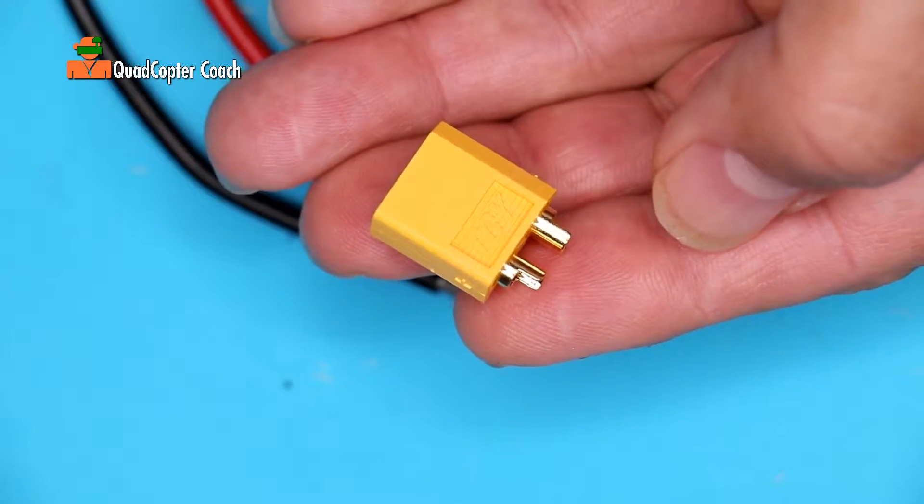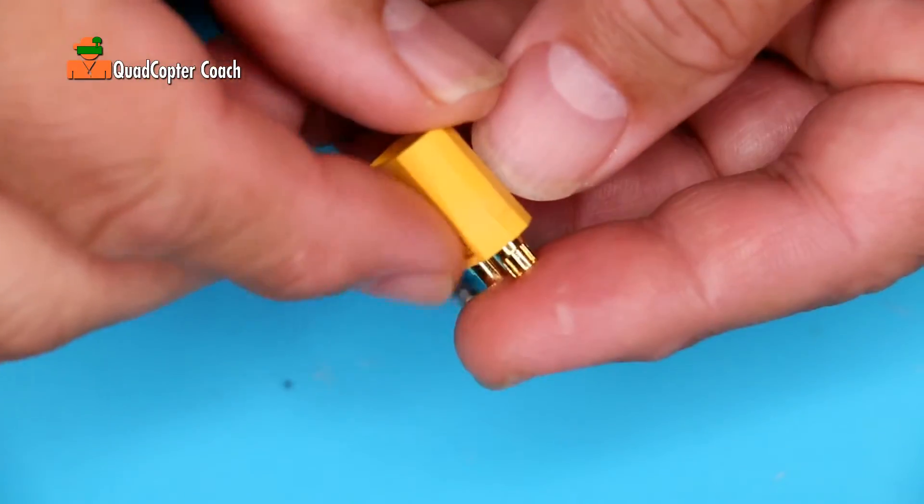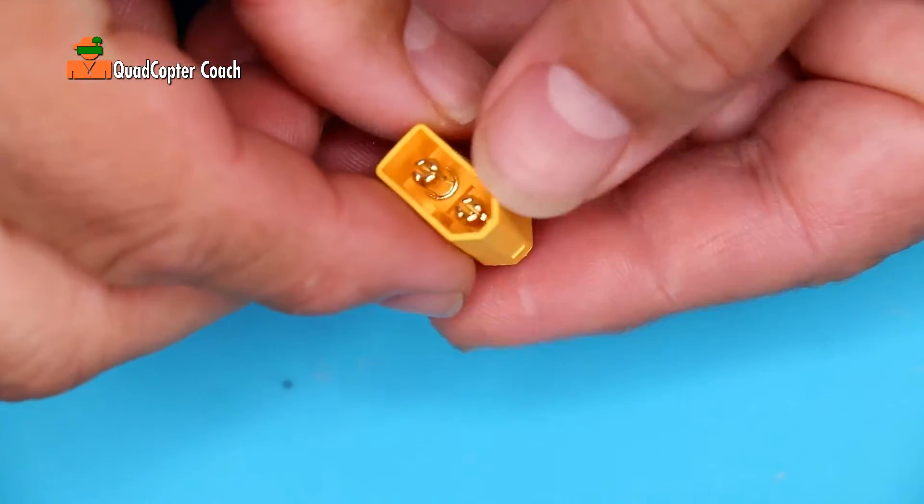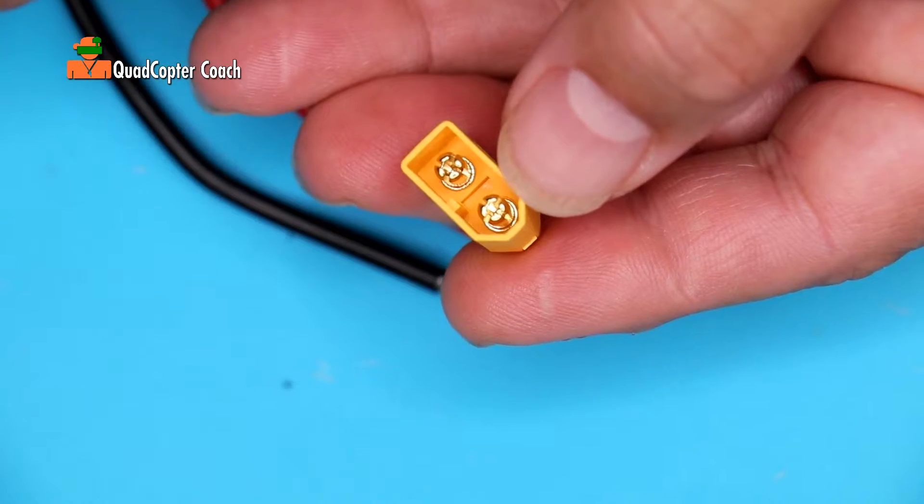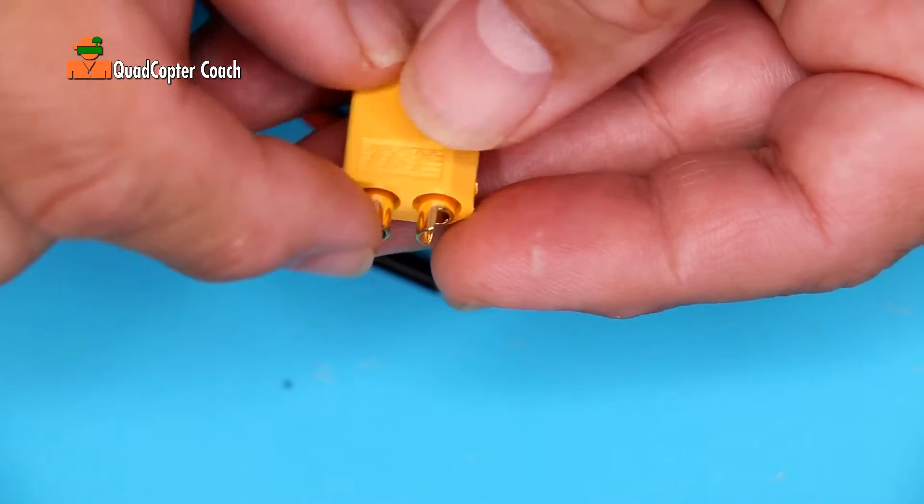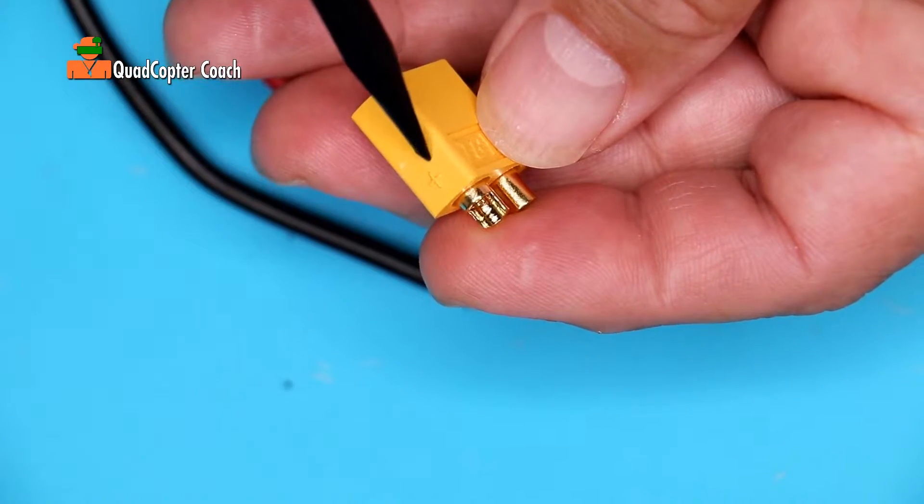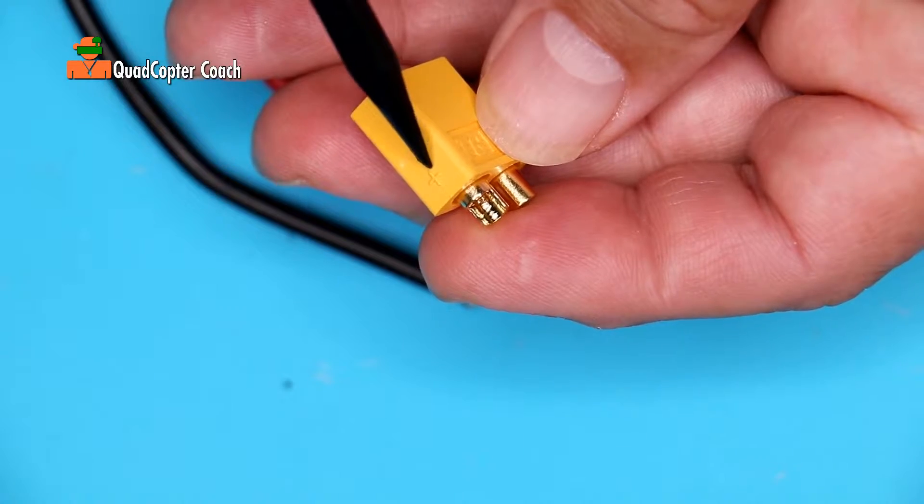Take a look at your XT60 connector. You'll notice there's a square side and a triangular side. This is where we plug it into the battery, and this is where we're going to have our wires connected. What I'd like you to pay special attention to is that plus sign. Right there, that plus sign. That is our positive wire.